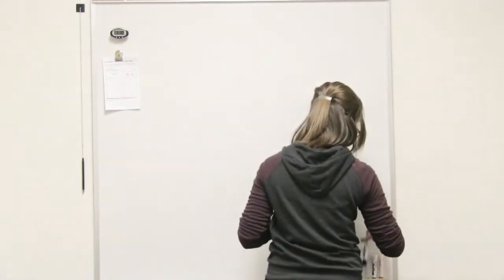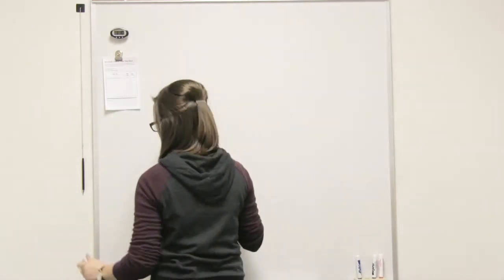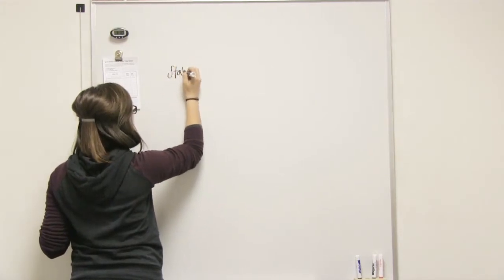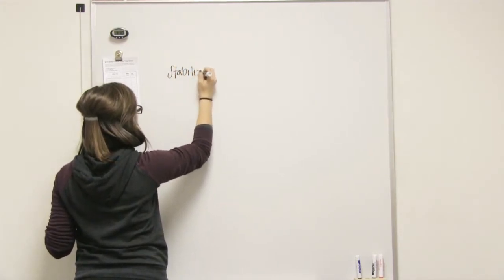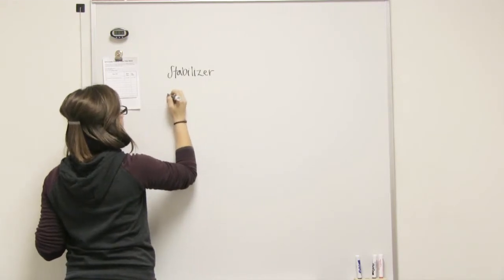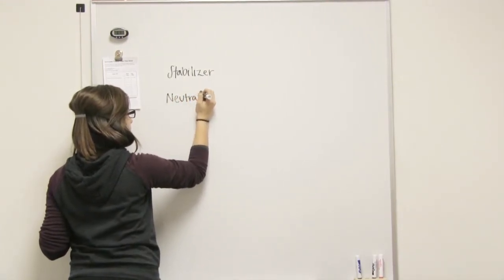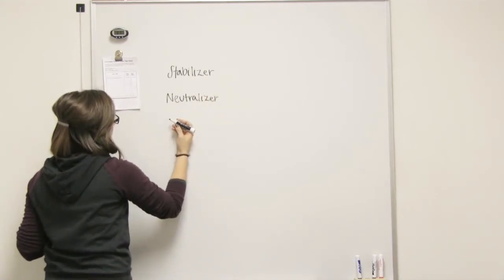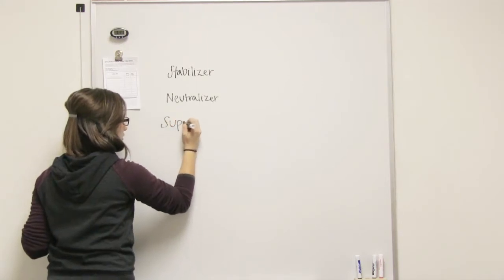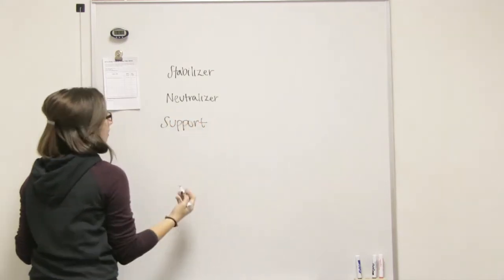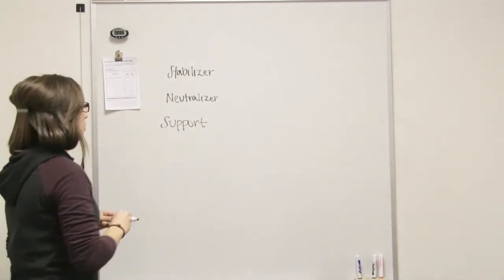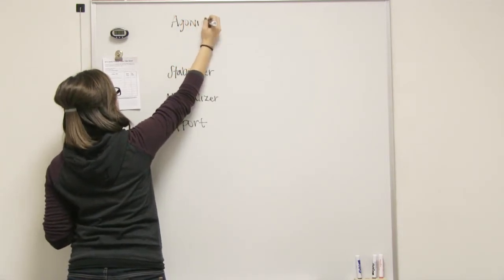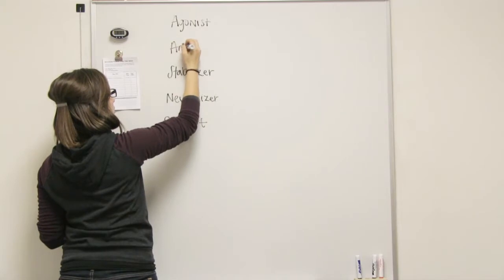So let's define each of them. We have a stabilizer, we have a neutralizer, we have support muscles, and the antagonists and agonists. We can go over those too. And synergists? Yes. Neutralizers, stabilizers, support muscles, synergists.